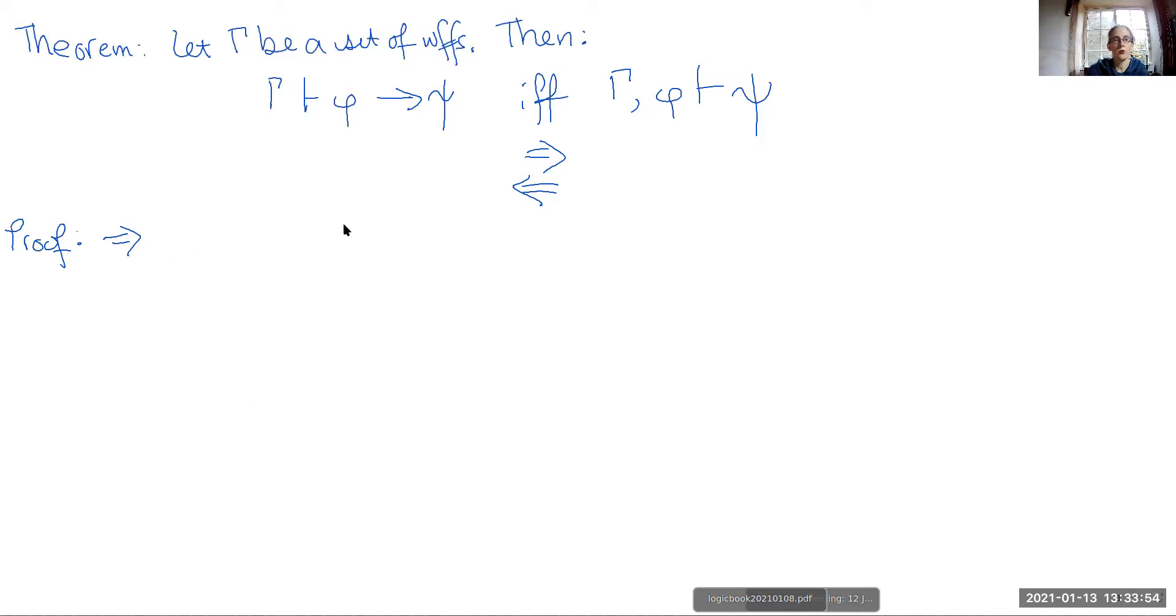What we're going to do is assume that from gamma we can in fact prove that phi implies psi. We don't know what the proof looks like, but we know that we have it because that's what we have from our assumption.